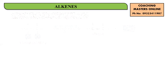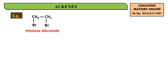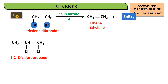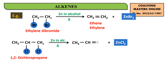Let's do this with examples. If you take ethylene dibromide — remember, 'ethylene' means vicinal — and treat it with Zn in the presence of alcohol and heat, zinc combines with both the bromines giving ZnBr₂, and you get CH₂=CH₂, which is ethene or ethylene. Similarly, if you take 1,2-dichloropropane with Zn in the presence of alcohol and heat, zinc combines with both chlorines giving ZnCl₂, and you get CH₃–CH=CH₂, which is propylene or propene.